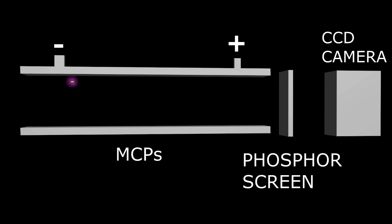In newer CCD detection systems, the electrons are multiplied again in a multiplier, and when they hit the phosphor screen, photons are created. Those photons are then captured with a digital camera.